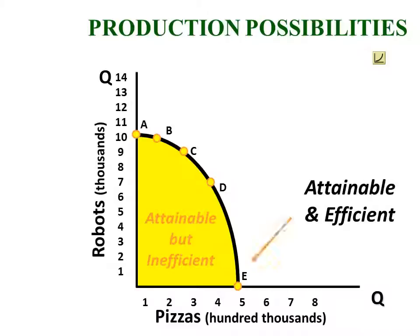Anywhere along the curve, we're achieving full employment. The curve represents the best we can do — we can't get beyond the curve. The curve represents our economic limitations, our potential economic output if we're achieving full employment and using all of our available resources.